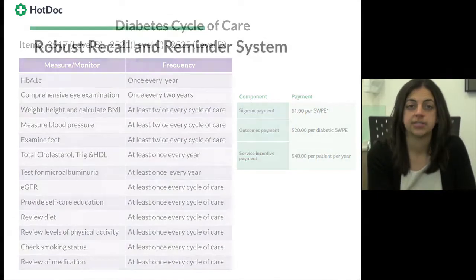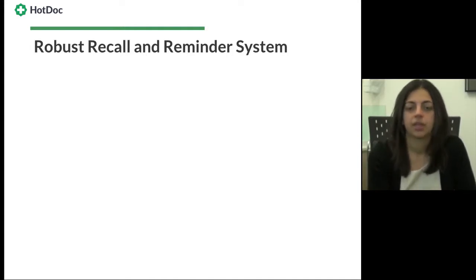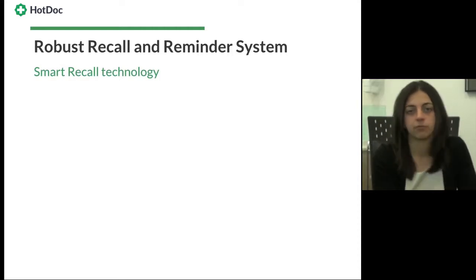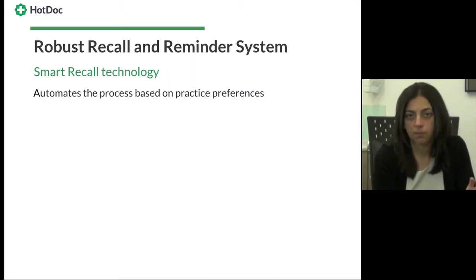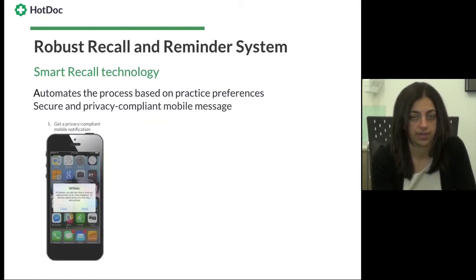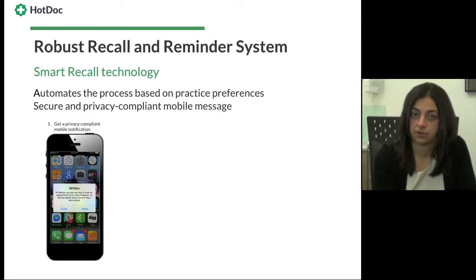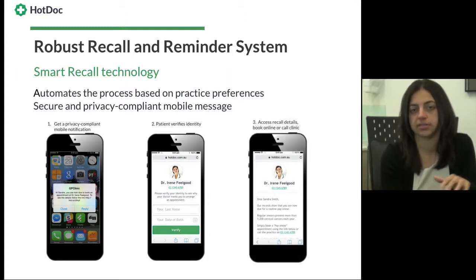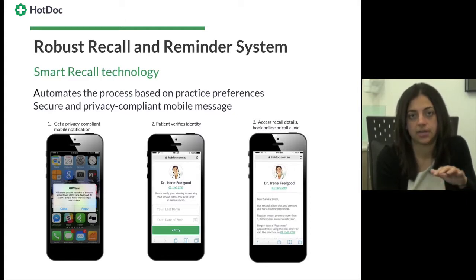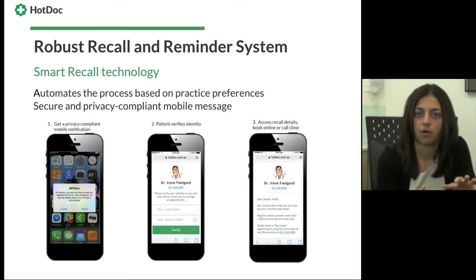One of the most important things when implementing diabetes management initiatives is having a robust recall and reminder system. Our clinic uses smart recall and reminder technology that automates the process based on practice preferences, making recalls much quicker and saving the practice on patient mail-outs, which can be expensive and time-consuming. The system sends a secure, privacy-compliant mobile message that includes a three-point identity verification before any patient information is revealed, and allows the patient to immediately make an appointment online or by calling the practice from within the message. We've seen a considerable increase in appointments made following these smart recall notifications.